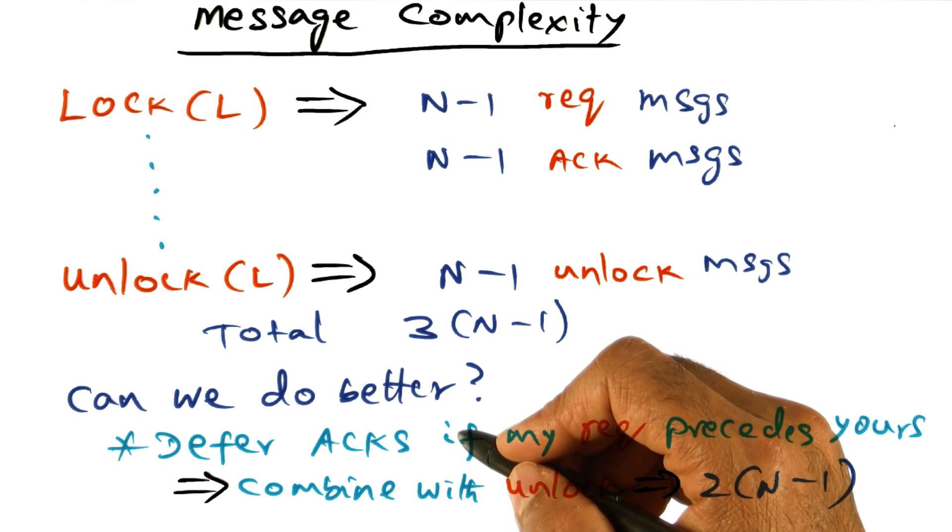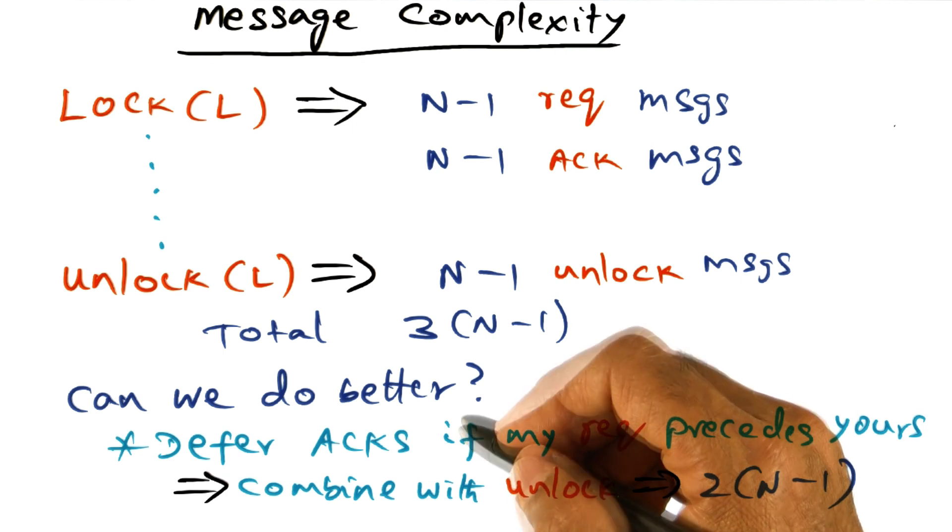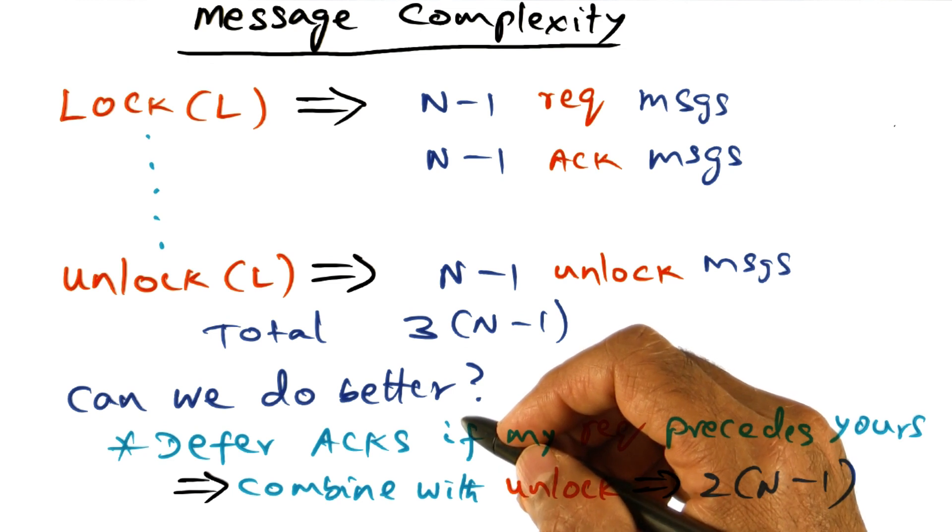And second, I should have either gotten acknowledgments for that request from everybody else, or I received a lock request from my peers that have a timestamp that is later than my own lock request. If the lock request that I received from my peers have timestamps that are later than mine, I know that they are going to wait for me to be served before they're going to use the lock.